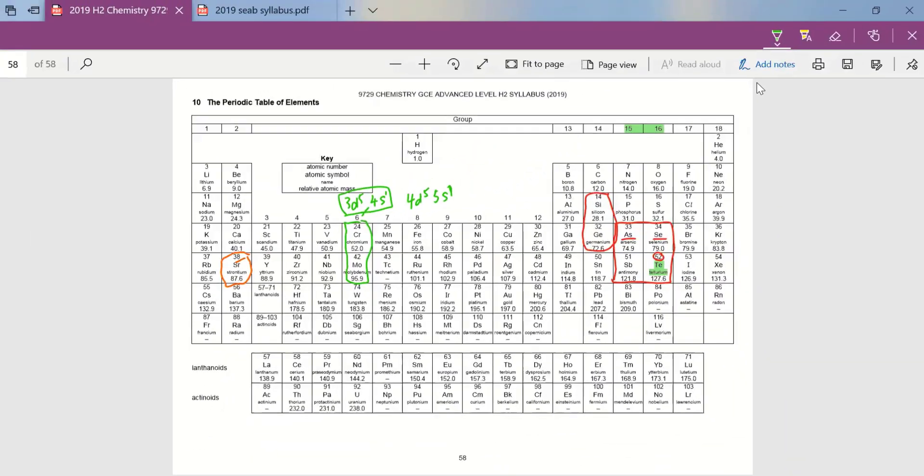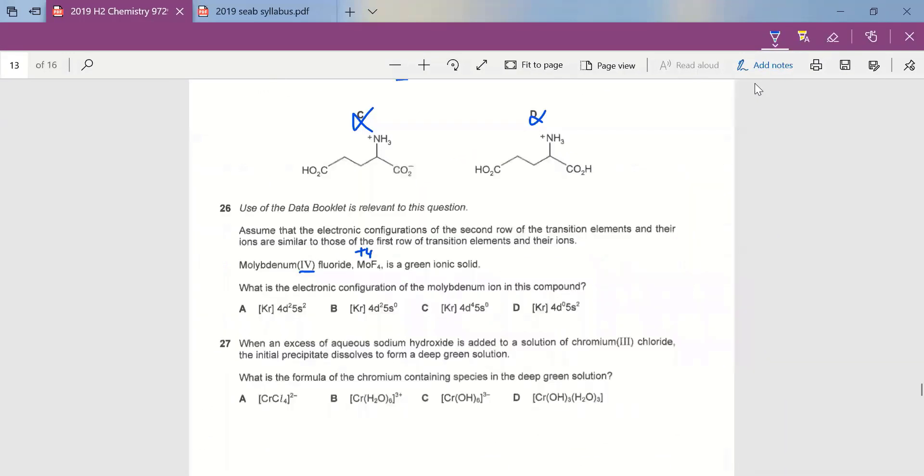Okay, so going back to the question, if we remove four electrons from 4D5, 5S1, we're going to end up with B. So B is going to be our answer.